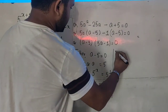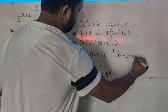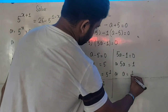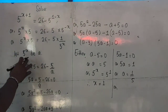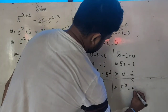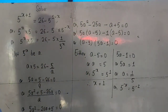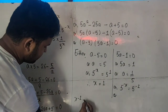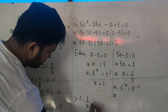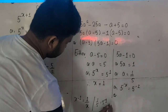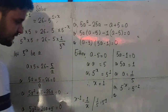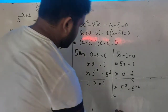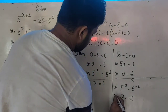The second possibility is 5a - 1 = 0, giving a = 1/5. Since a = 5^x, we have 5^x = 1/5. We know that 1/5 = 5^(-1) by the rule of indices. The bases are the same, so the exponents are equal: x = -1.